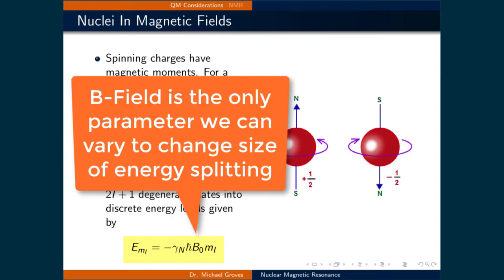Take note that almost all the values that determine this energy splitting are constants, which are related to the type of nucleus. The only variable that we can directly change is the strength of the magnetic field. So by increasing the magnetic field, we can increase the size of the energy split.